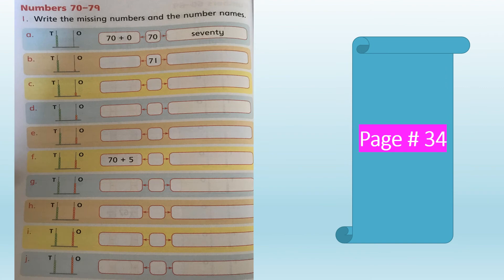Now we are moving to page 34, where we learn numbers from 70 to 79. The question says write the missing numbers and the number names. Let's start with part A, which is an example already solved for you. There are 0 ones in the ones rod and 7 green beads in the tens rod. So 7 tens means 70 plus 0 ones, which makes 70. The number name is S-E-V-E-N-T-Y, 70.